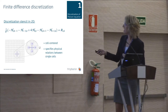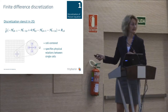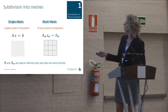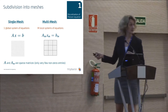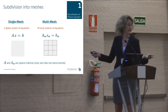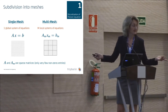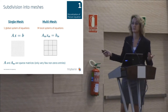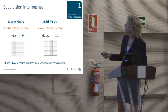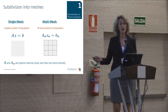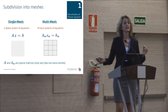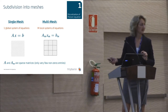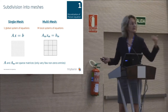If we apply this stencil for every single grid cell, we get a system of equations — a huge system if we only have one mesh, and a couple of systems if we have a multi-mesh case. All those matrices have in common that they are very sparse; there are only very few non-zero elements, which will be important later.